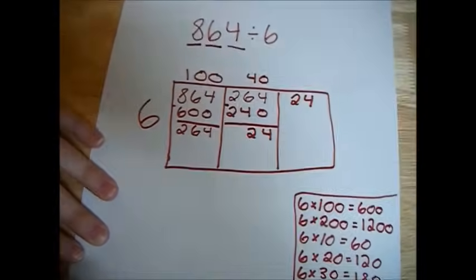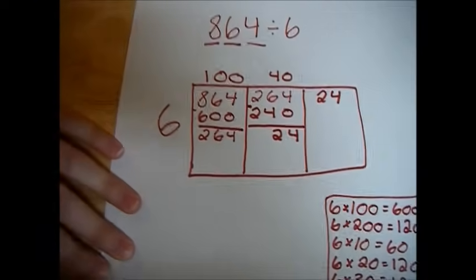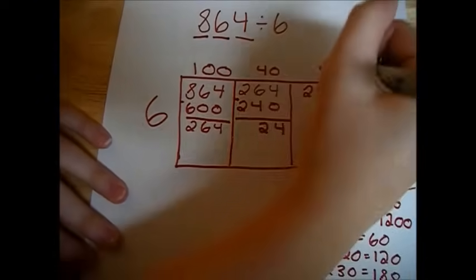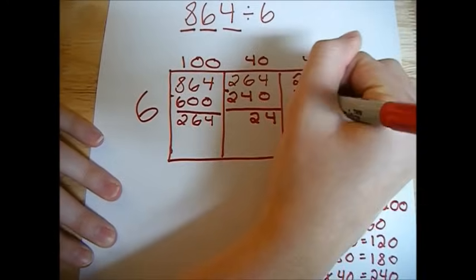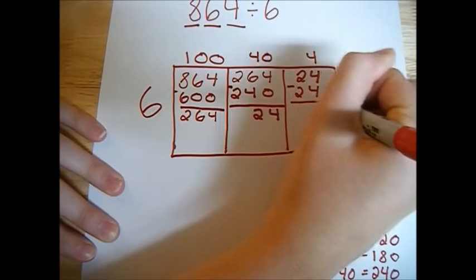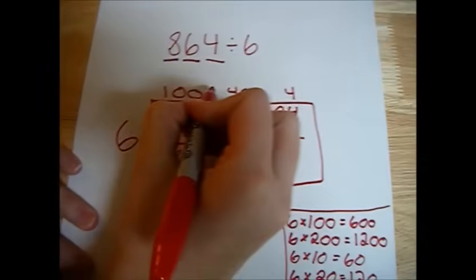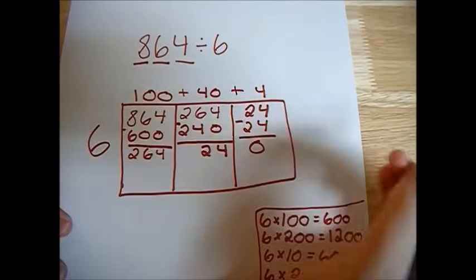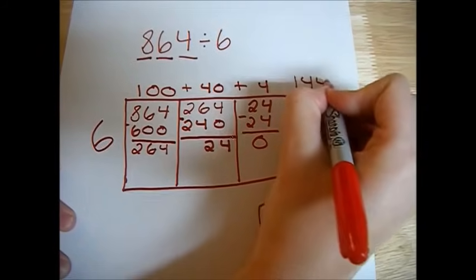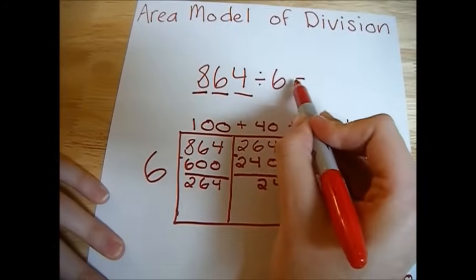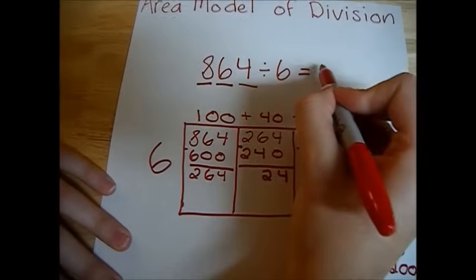Now again, you need to be studying your multiplication tables. You should be able to know this without your help box. 6 times 4 is 24. So we subtract and get nothing left over. So we know that 100 plus 40 plus 4 gives us 144. So 864 divided by 6 is 144.